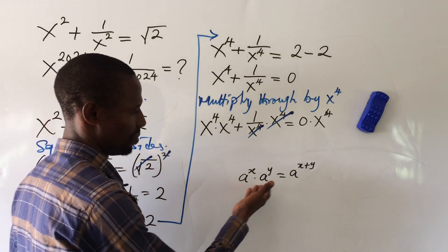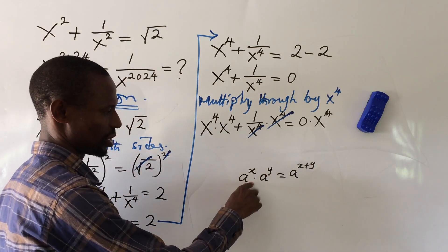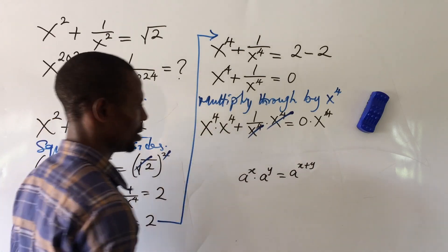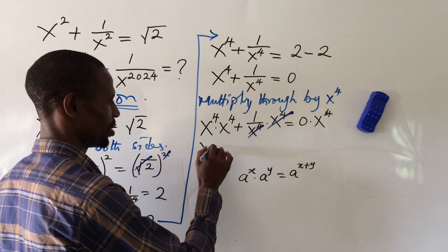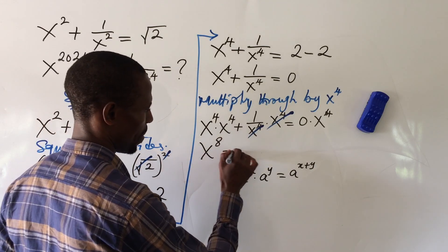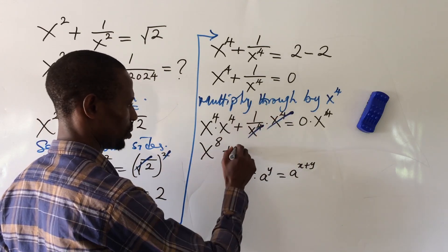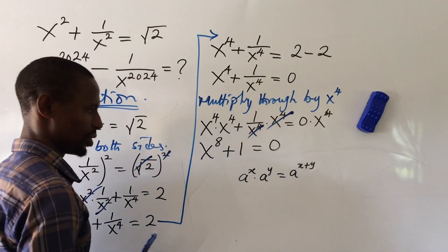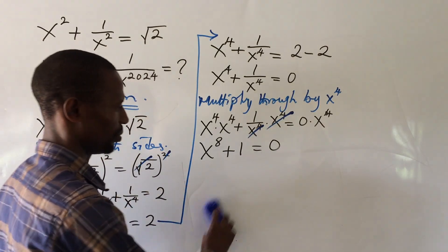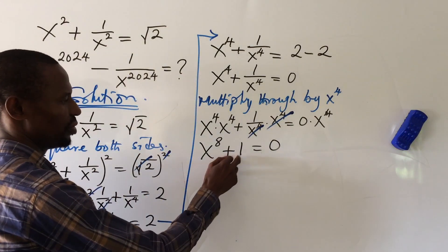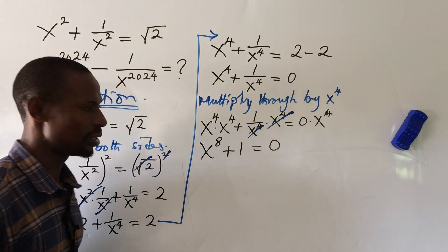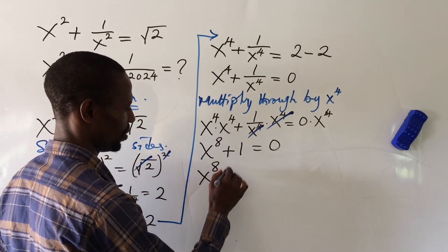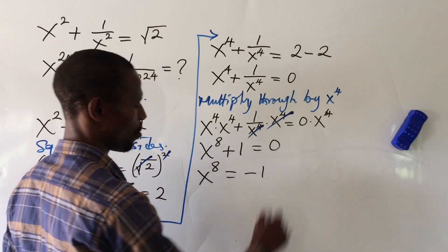Applying this, we add the powers: 4 plus 4 gives s to the power of 8, and we are left with plus 1 on the left side, equal to 0 on the right. Moving the 1 to the right gives us a minus, so we have s to the power of 8 equal to minus 1.